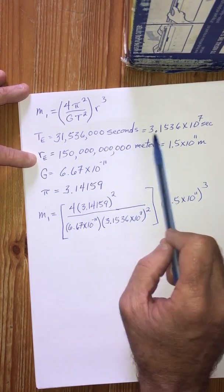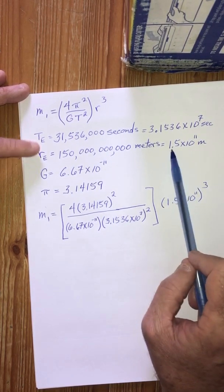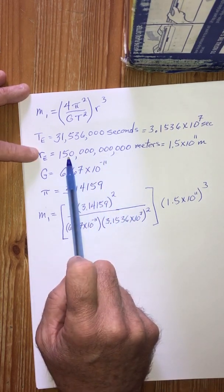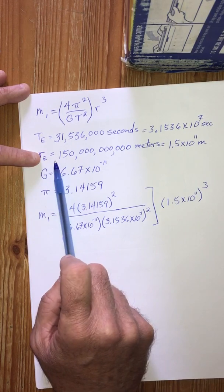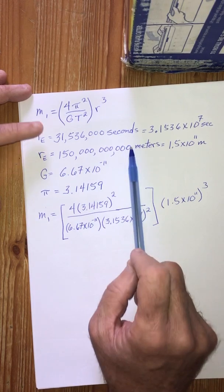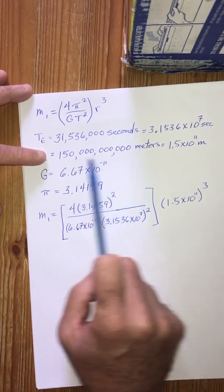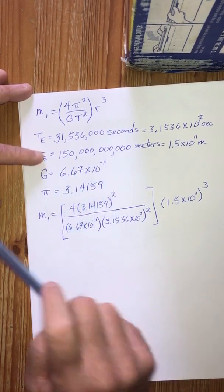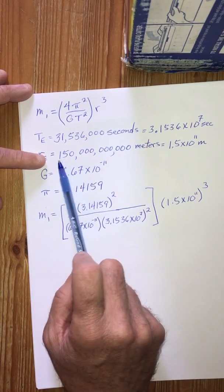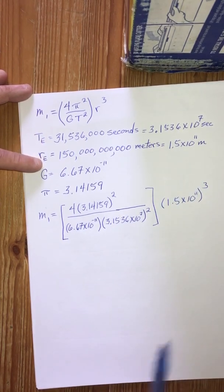This number that you end up with before the times ten to whatever it is, that number should always be between one and ten. So we don't want 15 times ten to the tenth, and we don't want 0.15 times ten to the twelfth. The 15 times ten to the tenth is too cold, and the 0.15 times ten to the twelfth is too hot. We want the one that's just right, which is the number that's between one and ten, 1.5. So that's how we get 1.5 times ten to the eleventh meters.